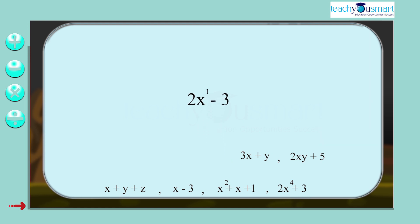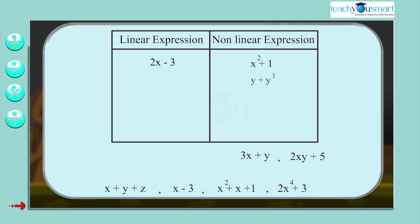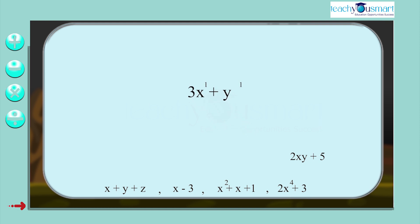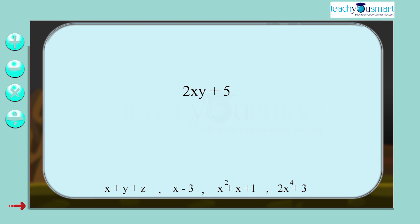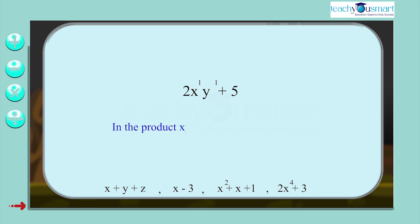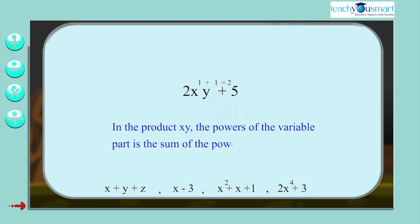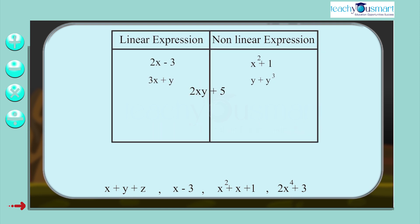In 2x minus 3, the power of x is 1, so it is a linear expression. In 3x plus y, there are two variables x and y and their highest power in the expression is 1, therefore it is a linear expression. In 2xy plus 5, there are two variables x and y and each variable is raised to the first power, but in the product xy the power of the variable part is the sum of the powers of each variable, that is 2, therefore it is not a linear expression.